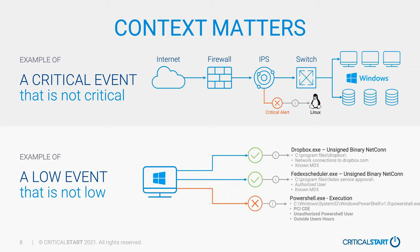Take Dropbox.exe — they love to do updates where they don't sign the first version in minor revisions. We'll get a new MD5 hash making a network connection out to Dropbox.com, it will be an unsigned binary, and that'll fire off an alert to an analyst. We look at it and say this is a low priority alert, but what context can we understand to confirm it's known good? If it's in C:\Program Files\Dropbox, making connections to Dropbox.com, we know the MD5 hash, the parent process is explorer.exe, it's running with the right privileges, no bad child processes — we have all these dimensions that allow us to understand this is actually good activity.